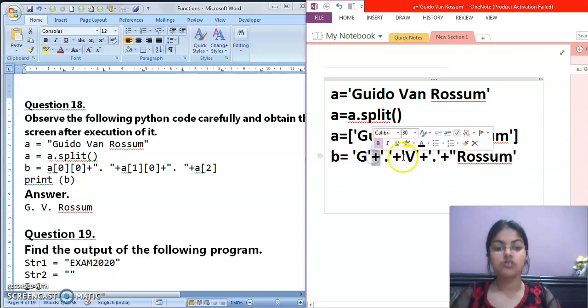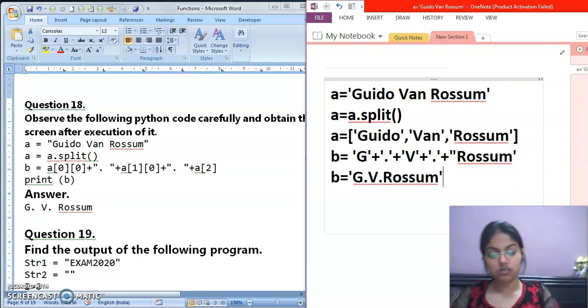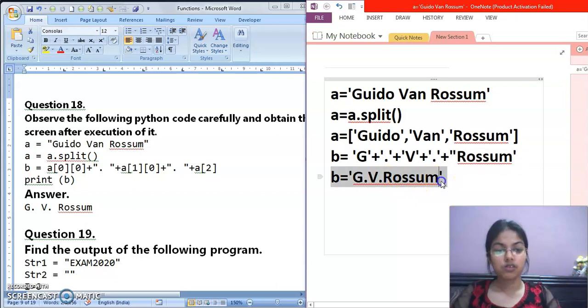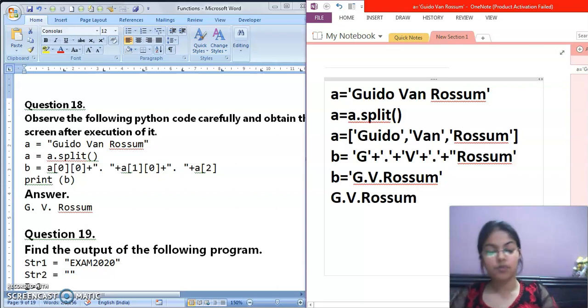This plus operator is used to combine the string. So B will contain now G.V.Rossum. Now you are going to print this value, print B. So this will get printed without quotes. This thing you know that now, if we are printing any string, we are using print function, so it will get printed without quotes. But if we are printing any list, tuple or dictionary in print statement, then brackets will be there.